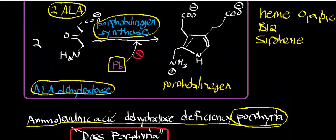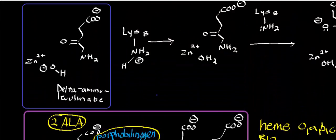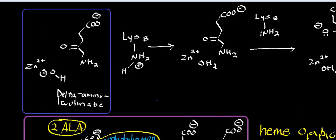In the next video, we're going to go over the regulation of this enzyme, because it's an important control point in the synthesis of heme, and in other organisms, the synthesis of B12 and siroheme. You have to regulate this enzyme before it gets too far into the pathway. But now I want to focus on the organic and partially inorganic mechanism of this enzyme, because in all these videos we're going to be doing the mechanisms.